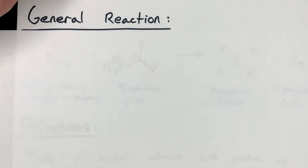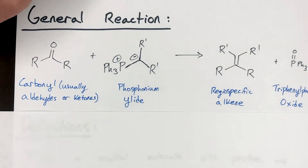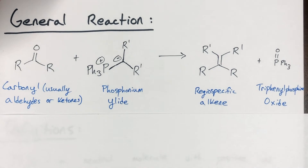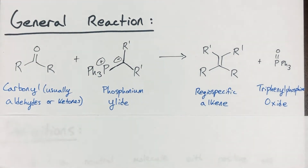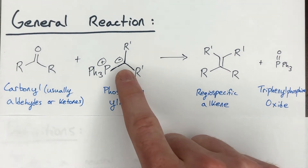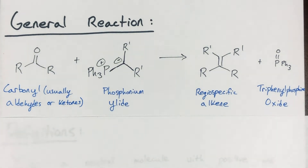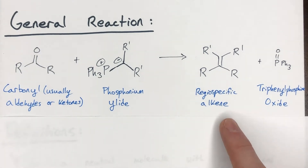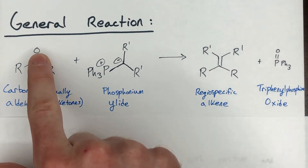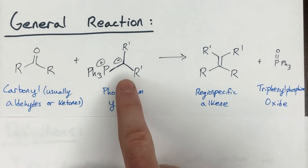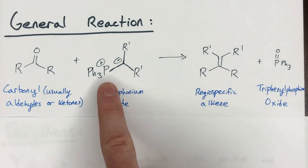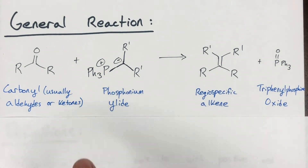The general reaction of a Wittig reaction is as shown. You'll have a general carbonyl — either from a ketone or an aldehyde — and then you will react this with a phosphonium ylid, which is essentially a carbon nucleophile. This will attack the carbonyl, and the ultimate reaction gives you this regiospecific alkene, where you essentially replace the carbonyl oxygen with the phosphonium ylid group — not the triphenylphosphine.